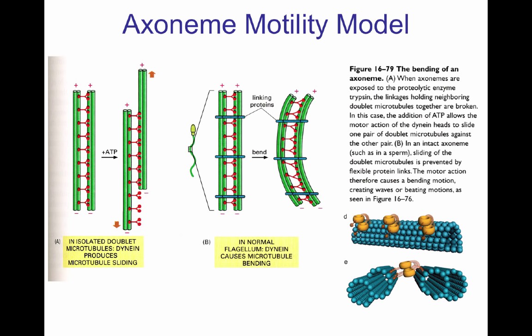Since you have nine different microtubule doublets, each with dynein motors attached, when one dynein-bearing doublet forces its neighbor to move and bend, the same thing happens in the bent doublet — it forces the neighboring doublet to bend as well. That is what causes the undulating movement that the flagella and cilia exhibit.